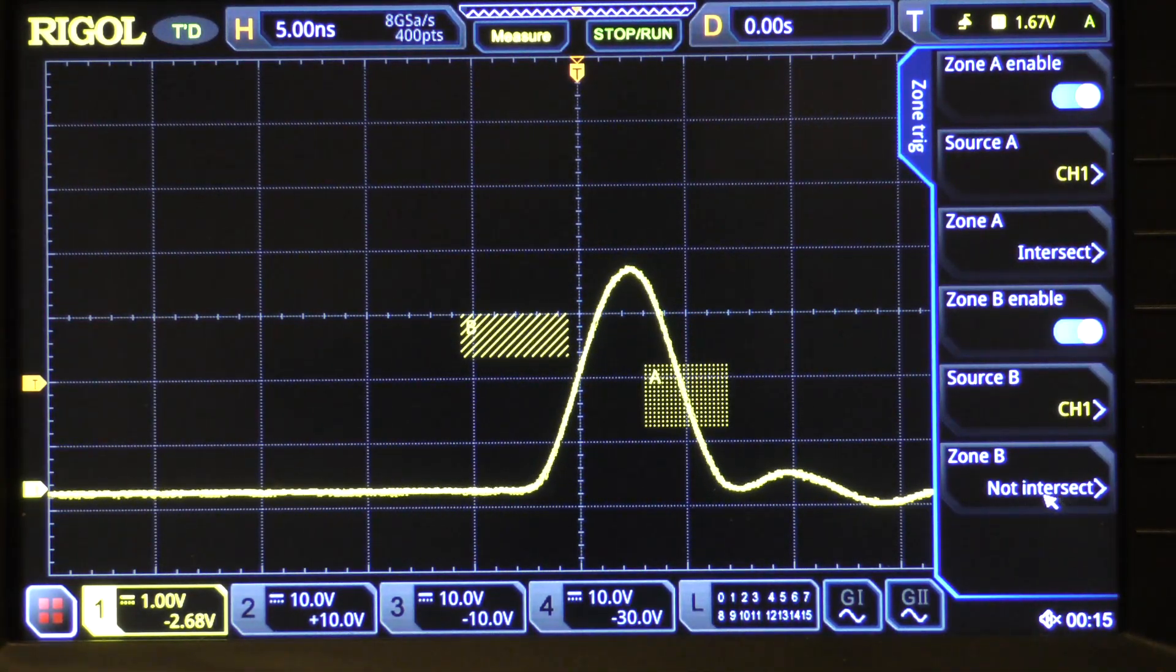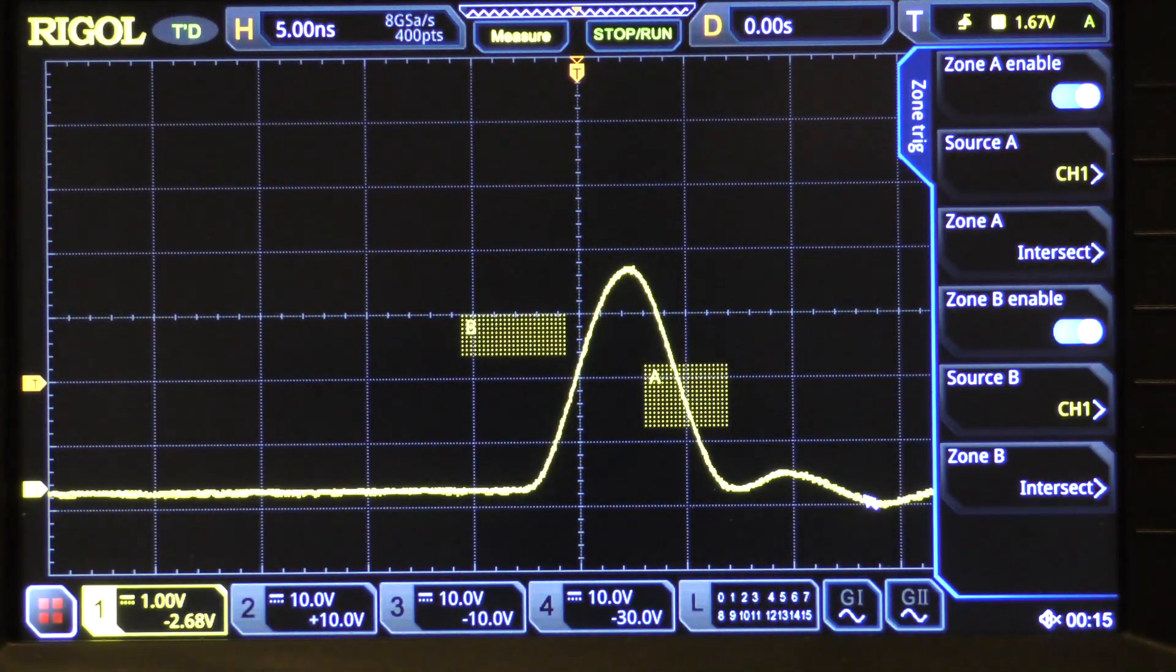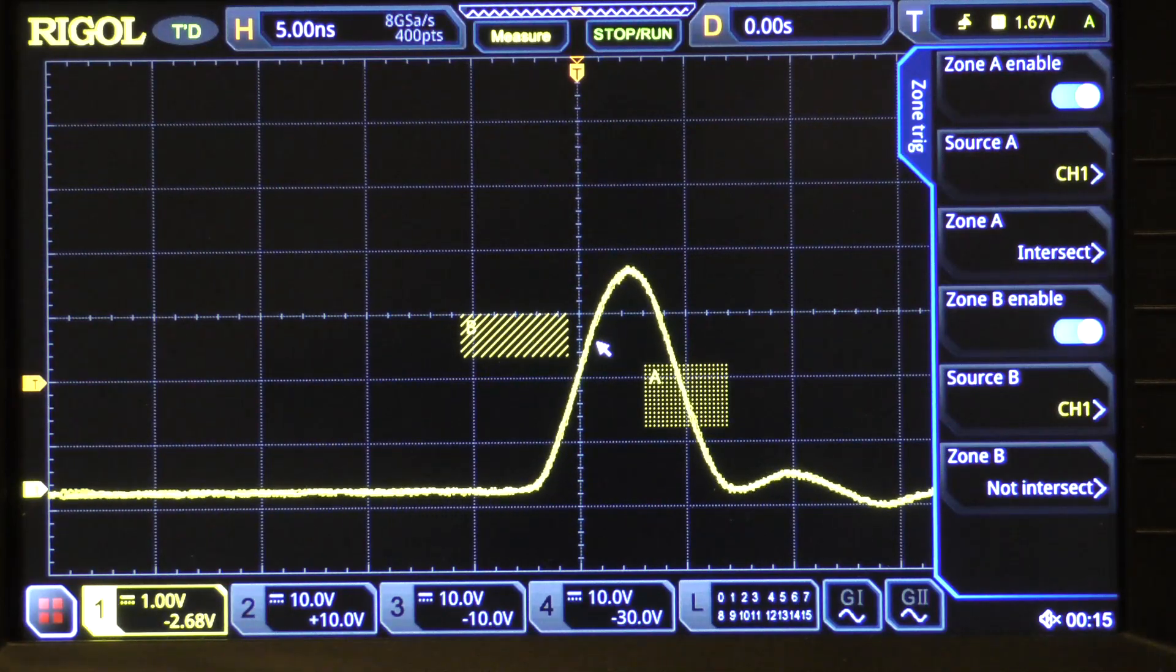Notice that it turns the enable on and now we are going to say it says not intersect. If we say intersect, you may notice the scope freezes because it cannot find a signal that intersects this and this. So, we are going to change that back to not intersect and now you may notice that the scope is triggering again. This is how zone trigger works on the MSO5000.